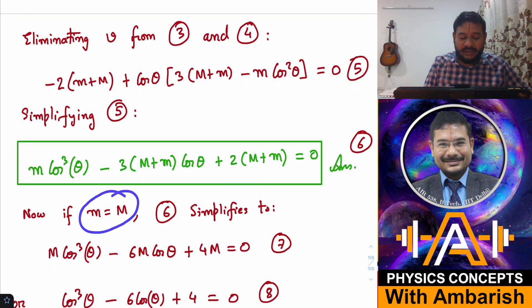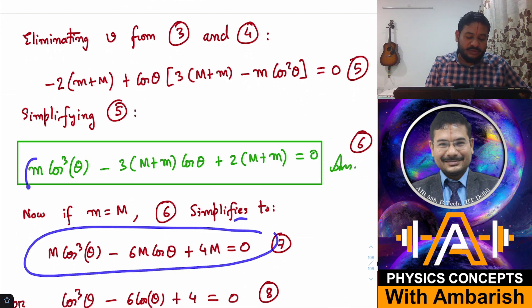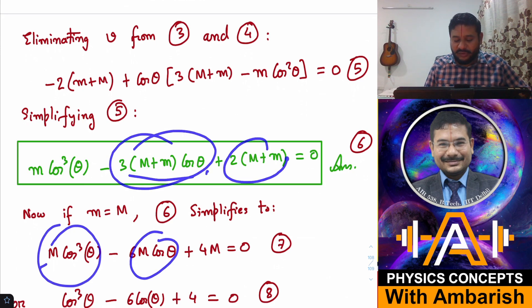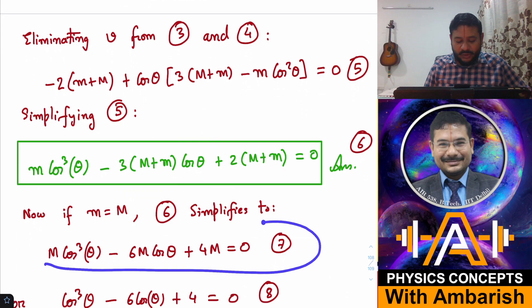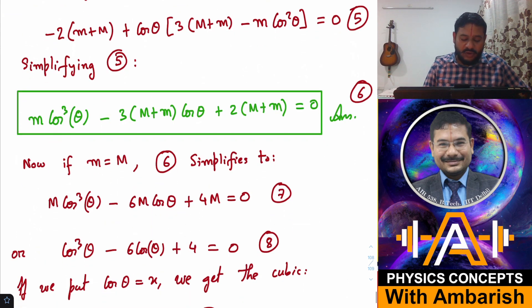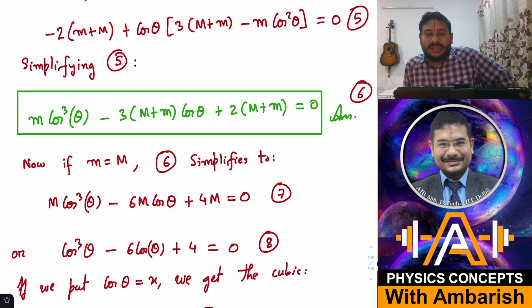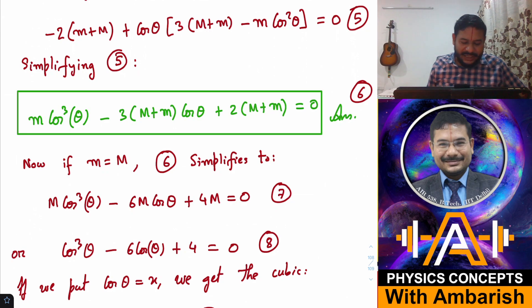Now for the pathfinder problem, we just need to substitute m equal to M and simplify. If you put m equal to M, this becomes M(cos θ)³ - 6M cos θ + 4M = 0. Divide the whole thing by M. You get (cos θ)³ - 6 cos θ + 4 = 0. This is the equation I need to solve, and bear in mind that the only acceptable roots will be where cos theta magnitude is less than 1. Any root where magnitude is greater than 1 is obviously irrelevant.